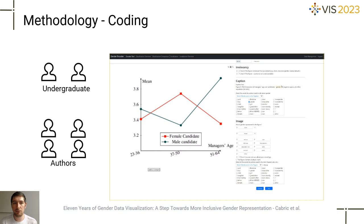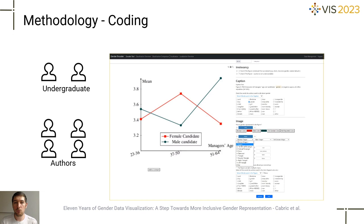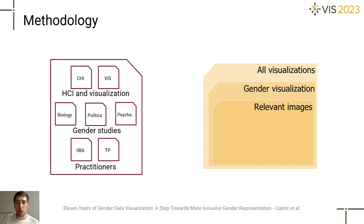To help coders and collect data, we developed an online tool that you can see in the video now. In this tool, coders selected whether or not a visual variable is used to distinguish gender in the visualization, except for color and shapes, which require a detailed selection, as you can see in the video. Of the 2,122 visualizations, 904 were relevant, and due to some refinement, we used only 673 visualizations for the analysis.